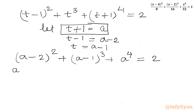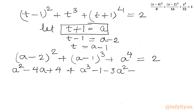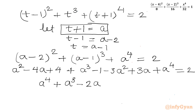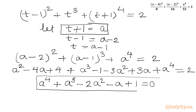So the equation becomes (a-2)² + (a-1)³ + a⁴ = 2. Expanding using (a-b)² = a² - 4a + 4 and (a-b)³ = a³ - 3a²b + 3ab² - b³, then simplifying the LHS, we get a⁴ + a³ - 2a² - a + 1 = 0. This is a quartic equation in a.